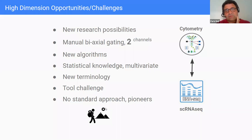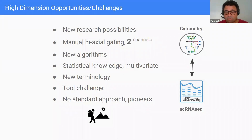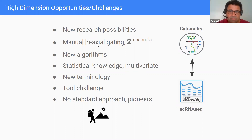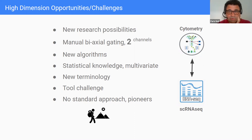As you increase channels you get more refinement, more readouts for characterizing cells, and more research possibilities. However, if you try to do traditional biaxial gating with 40 channels, two-to-the-20 is already a million biaxial gating plots, and two-to-the-40 is billions — not achievable. We need new algorithms to handle this. Statistical knowledge is required; you need to know how these algorithms behave. This is called multivariate analysis, and cheminformatics researchers have been doing it for a while.